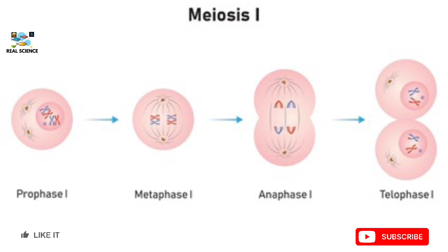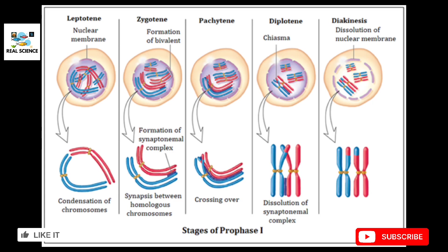Meiosis I has four phases: prophase one, metaphase one, anaphase one, and telophase one. Prophase one of meiosis one is divided into five sub-stages. The first is leptotene, the second is zygotene, the third is pachytene, the fourth is diplotene, and the fifth is diakinesis. In the leptotene phase, the nuclear membrane starts to disappear and the chromosomes condense.